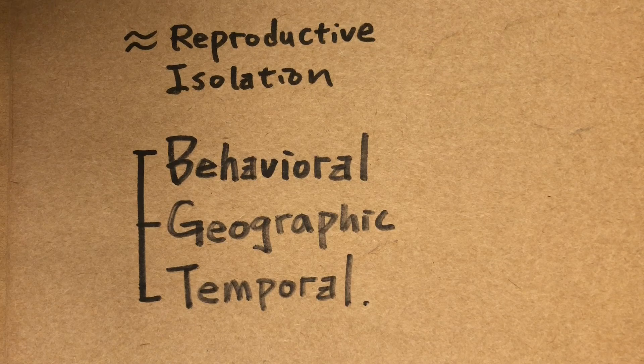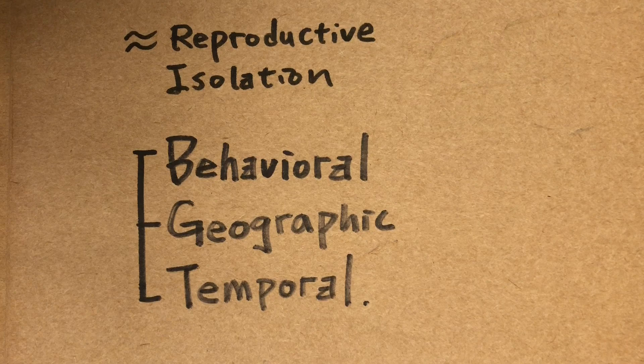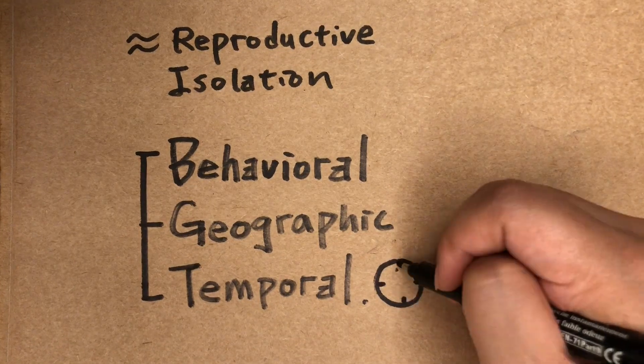Behavioral isolation means they behave so differently that they're not even interested in one another. Geographic isolation is when the two live so far apart that the chance they get together is relatively small. And temporal isolation means they do things in different times.